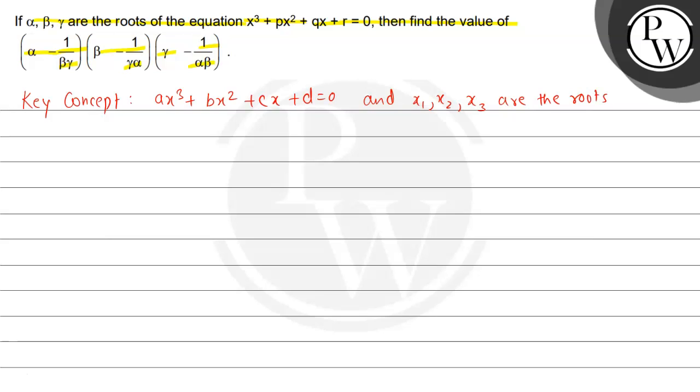then summation of the roots, that is x1 plus x2 plus x3, is equal to minus b by a. And x1 x2 plus x2 x3 plus x3 x1 is equal to c by a. And x1 x2 x3 is equal to minus d by a.